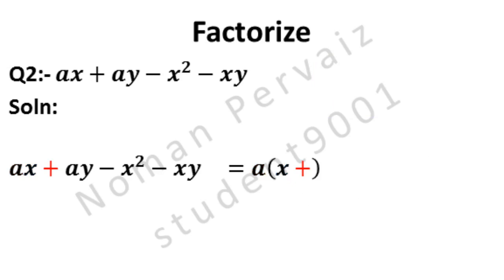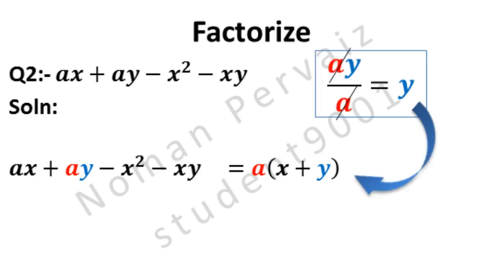Here also A is common, so Y is left only. A is common, so if we divide AY by A, then A is cancelled with A and Y will be left only. This Y is written in our solution.